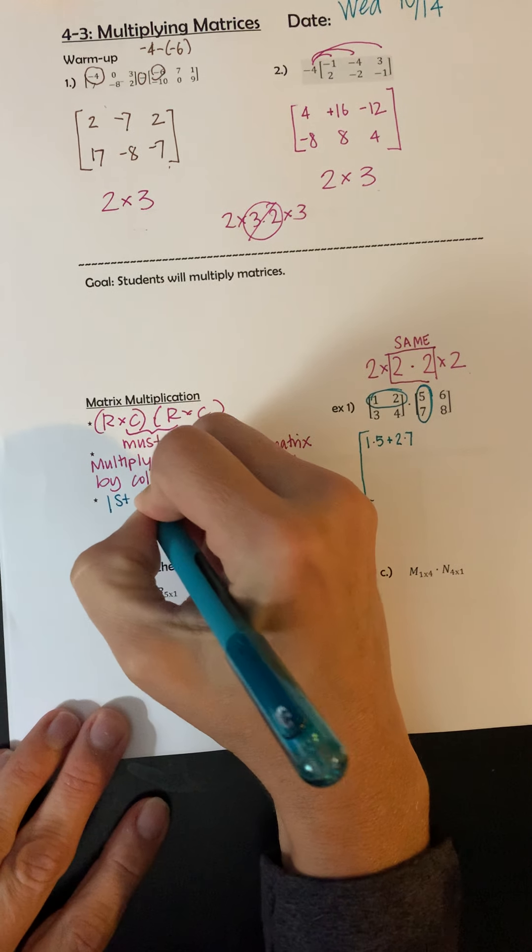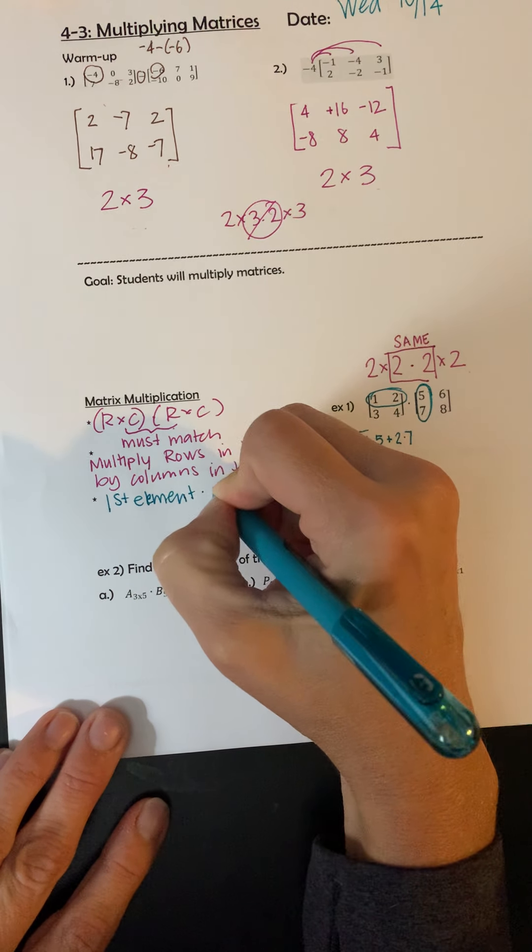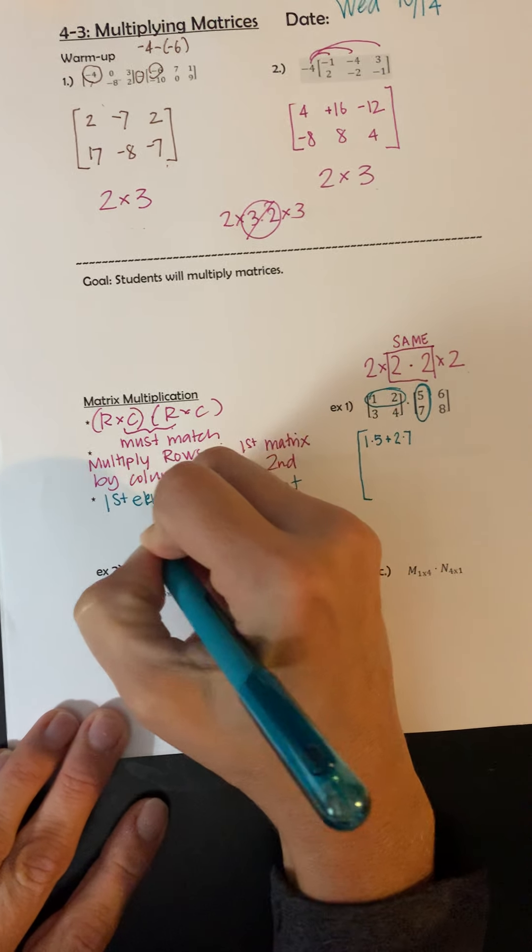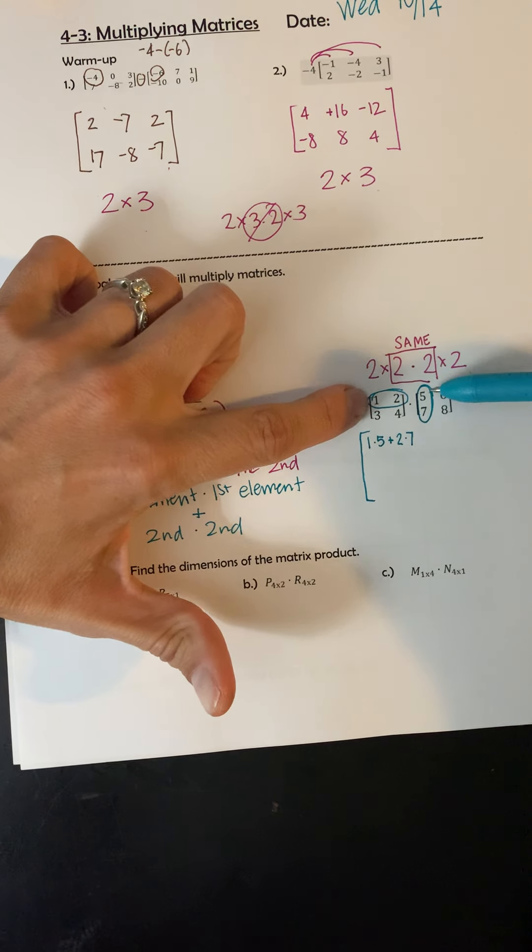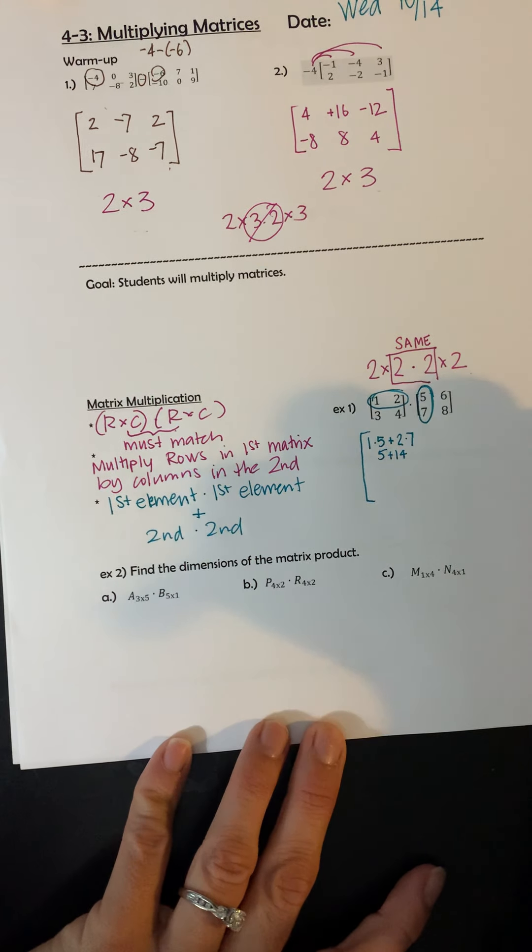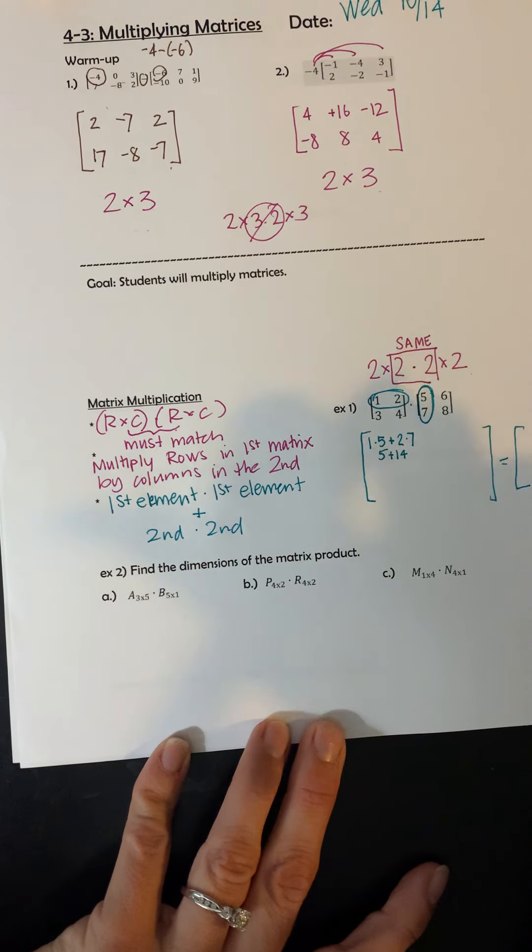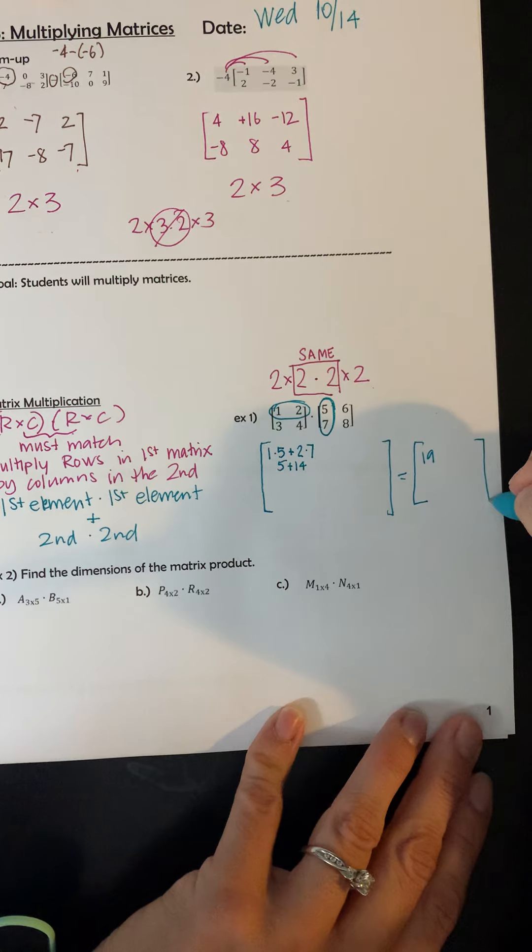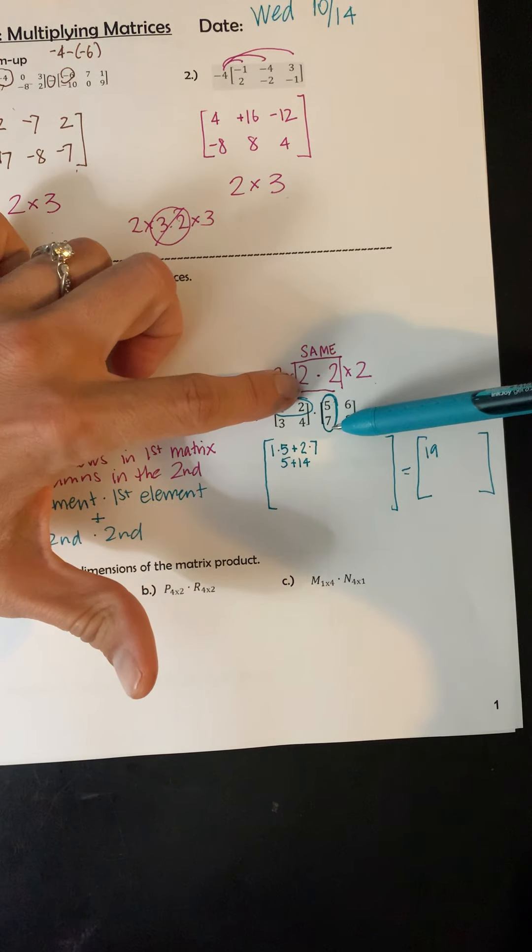So first element times first element. Second times second, and then we add them. So 1 times 5 plus 2 times 7. So this will end up being 5 plus 14. I'm kind of just showing my work here. So I'm going to write the answer over here. So 5 plus 14 is going to be 19. So that's my first term in my answer. And where the 19 came from is 1 times 5 plus 2 times 7.